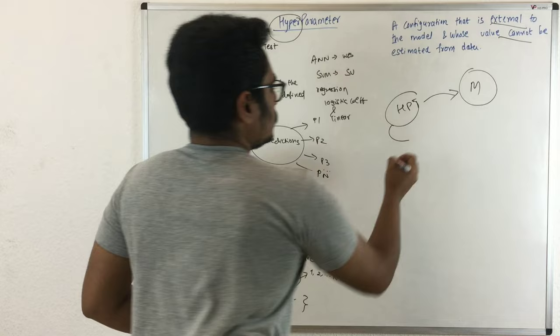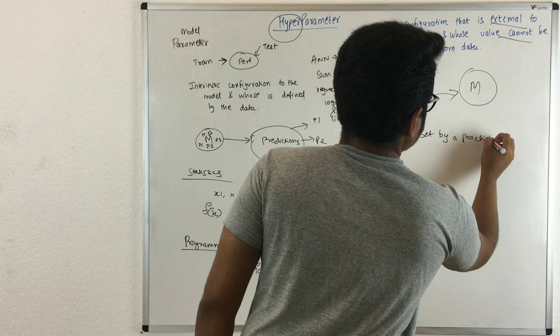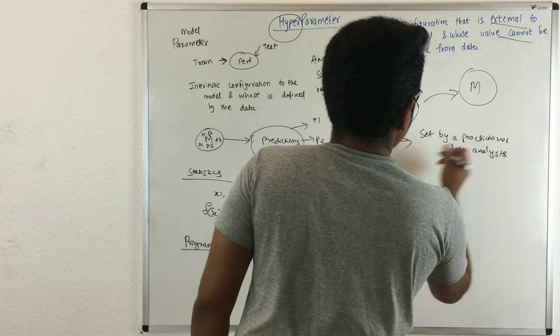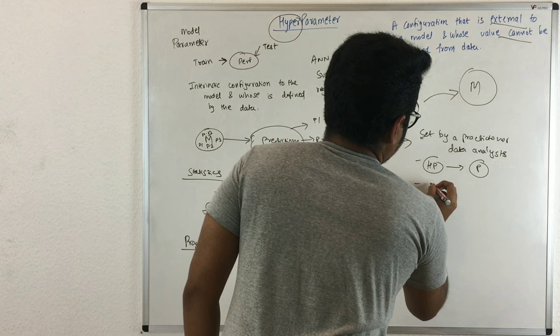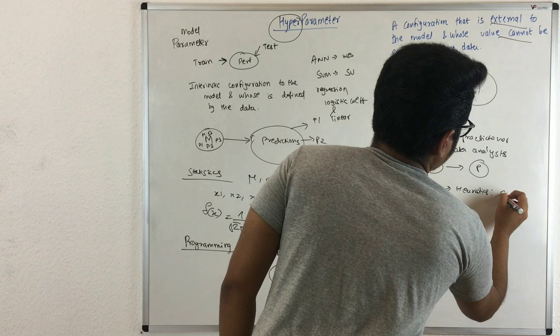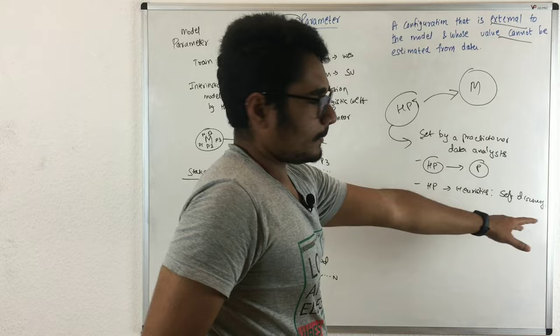First, hyperparameters are set by a practitioner, like a data analyst. Second, hyperparameters are used to derive the model parameters - you set the hyperparameter externally before the model parameters are derived. Third, hyperparameters are derived from heuristics, meaning there is self-discovery of the value instead of it being automatically set.